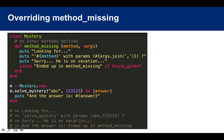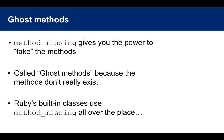Basically, what method_missing allows you to do is call any methods you want on the instance of a mystery class. It lets you fake the methods. This is called the ghost methods pattern, because the methods are ghost methods — they don't really exist. Ruby's built-in classes use method_missing all over the place.